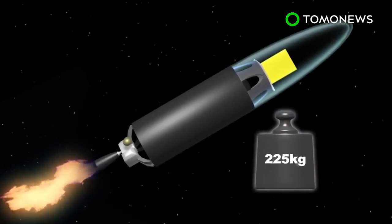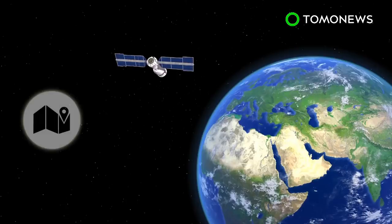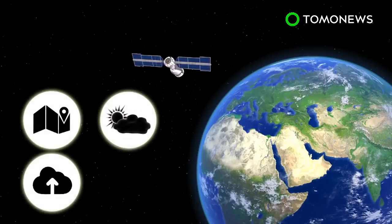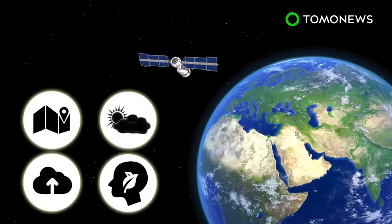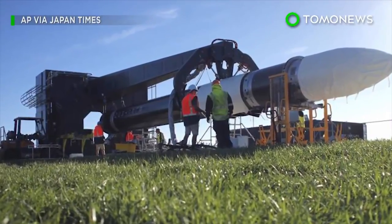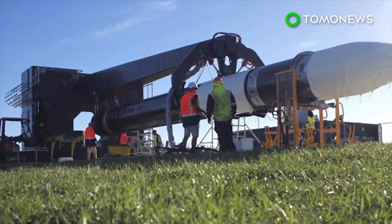The Electron rocket will deliver small satellites into space. They will be used for mapping, to predict the weather, provide high-speed internet, and analyze the environment. Rocket Lab plans to complete three test launches before the Electron is available commercially.